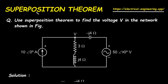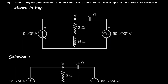The superposition theorem states that in any linear circuit with multiple independent sources, the total response — in this case, the voltage V — is the sum of the individual responses caused by each independent source acting alone. To analyze each source by itself, we must turn off all other independent sources. To turn off a voltage source, we replace it with a short circuit, which is just a wire with zero resistance. To turn off a current source, we replace it with an open circuit, meaning we create a break in the path so no current can flow.